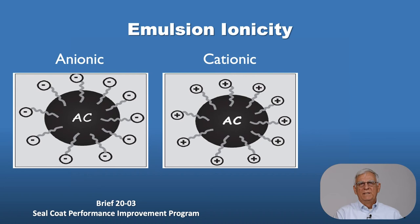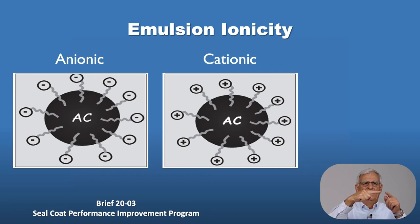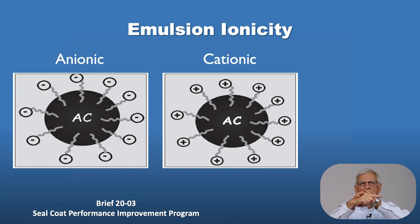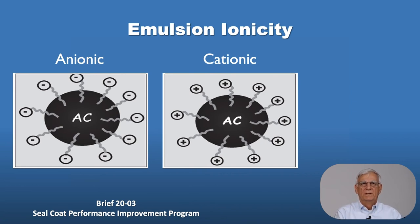The emulsifying agent can have a negative charge or a positive charge on it, much like a fist and finger — the finger part sticks into the asphalt cement, and the fist part is the plus or negative charge on the chemical that allows these materials to be in suspension for some period of time. We have anionic and cationic; if you put an anionic and cationic emulsion together, they will break immediately, and you should not do that.